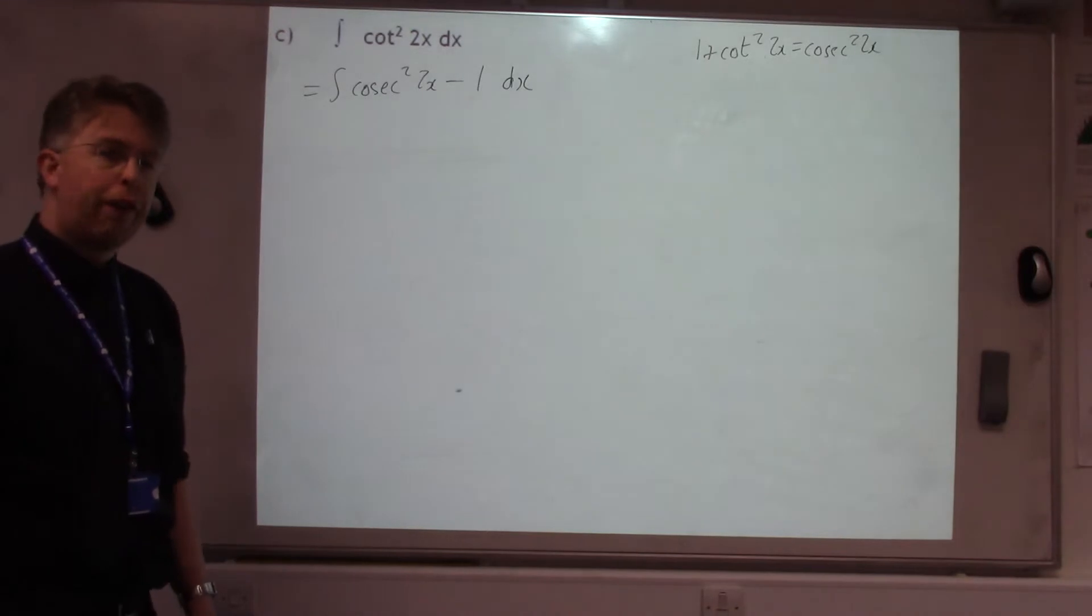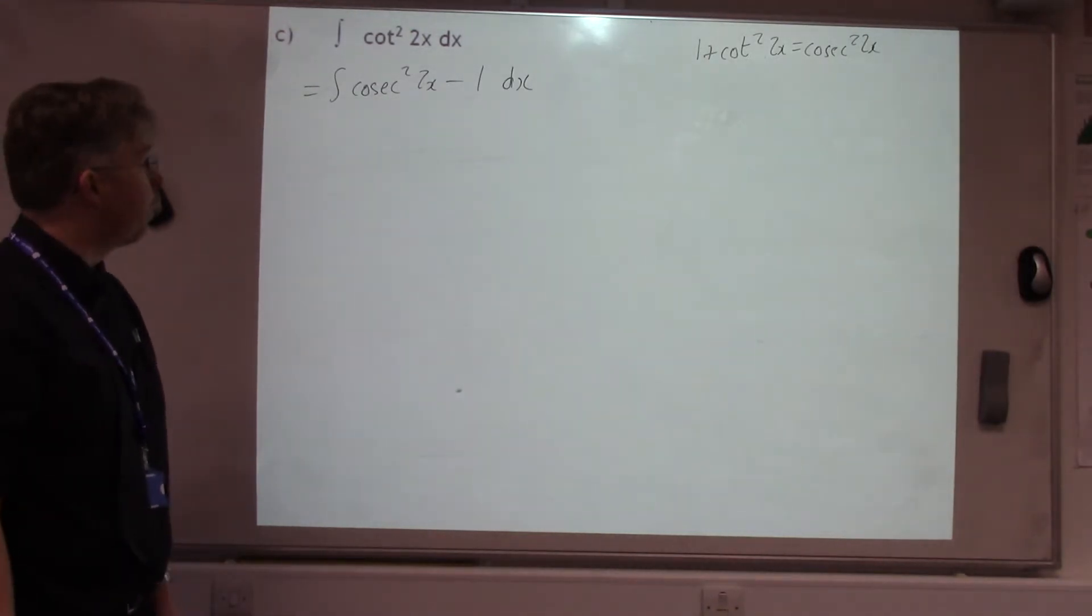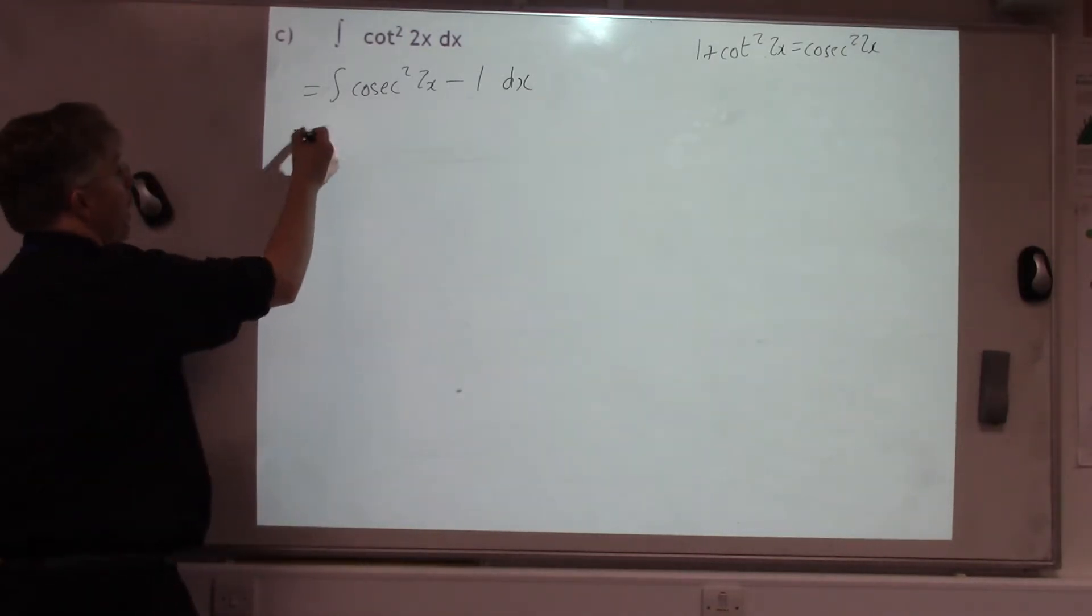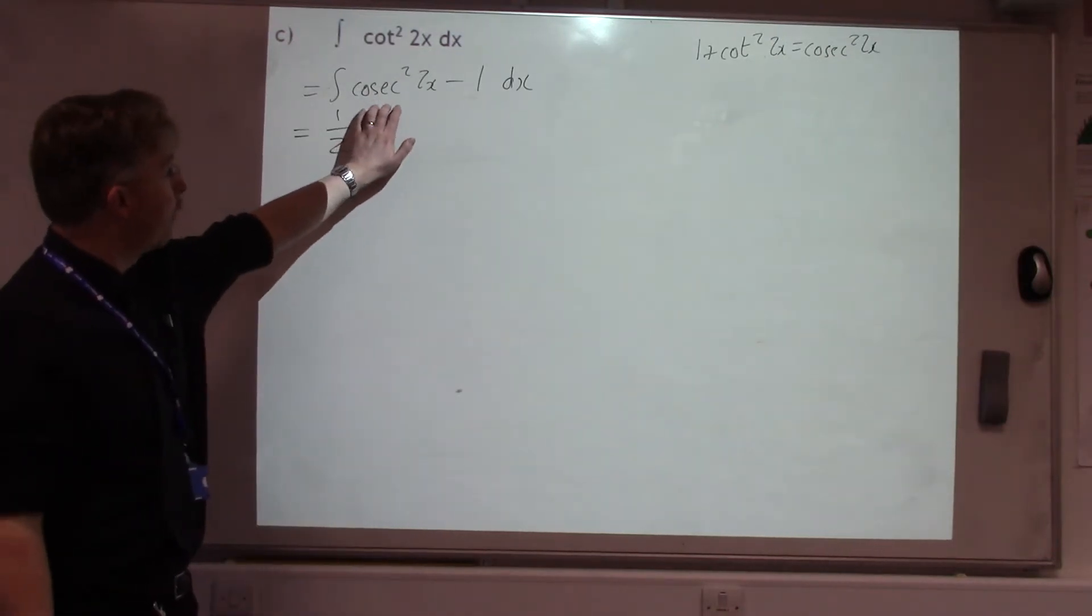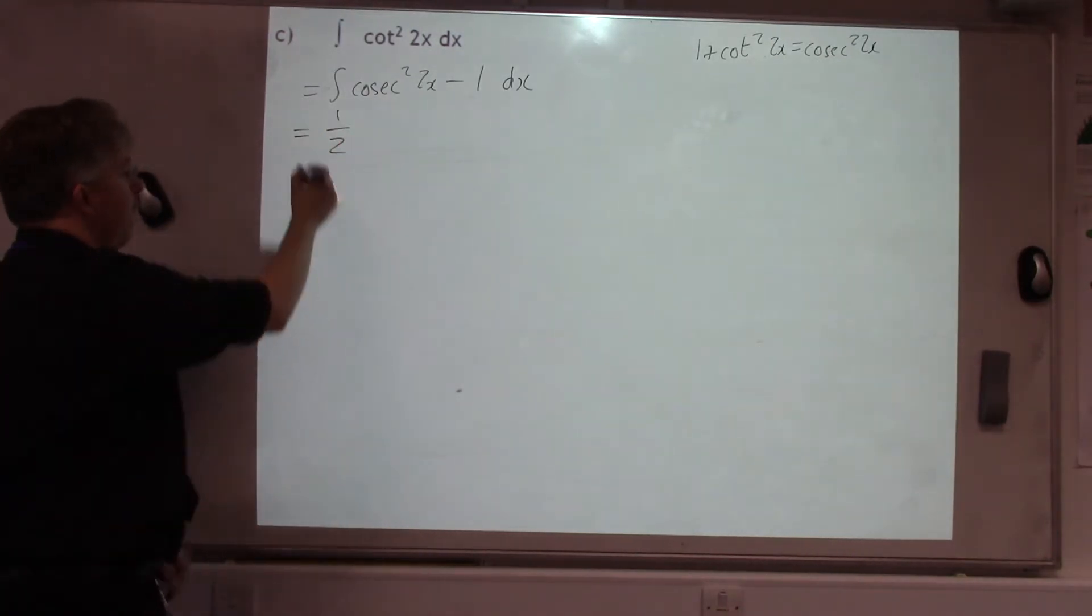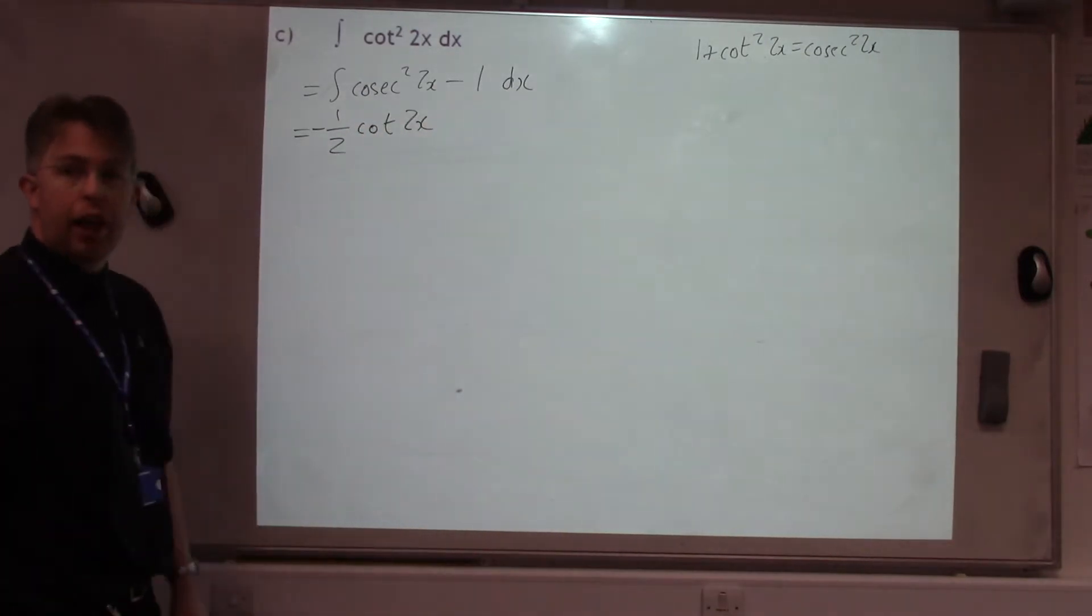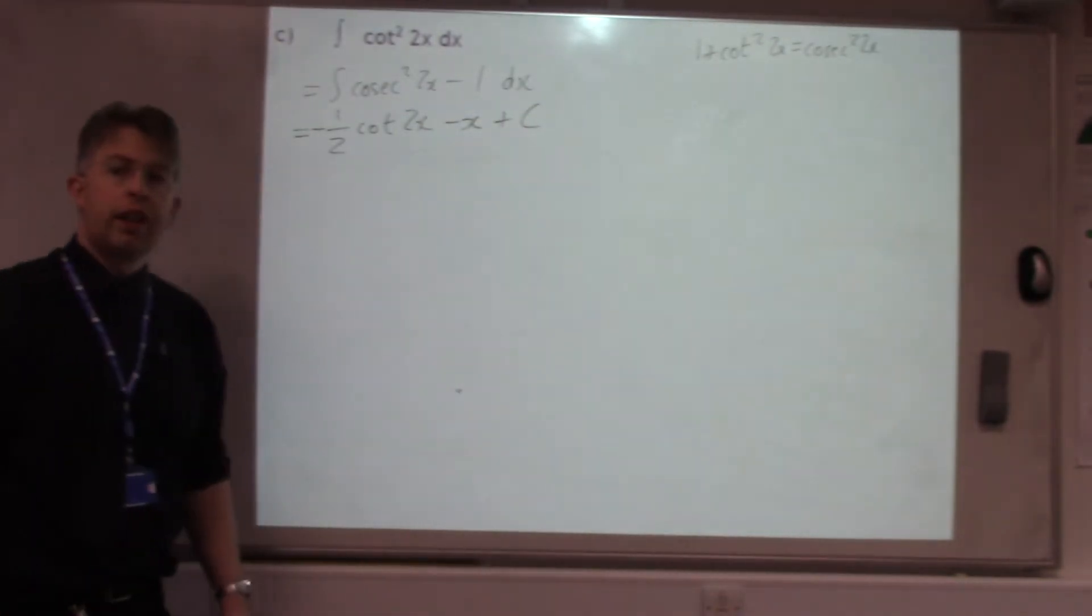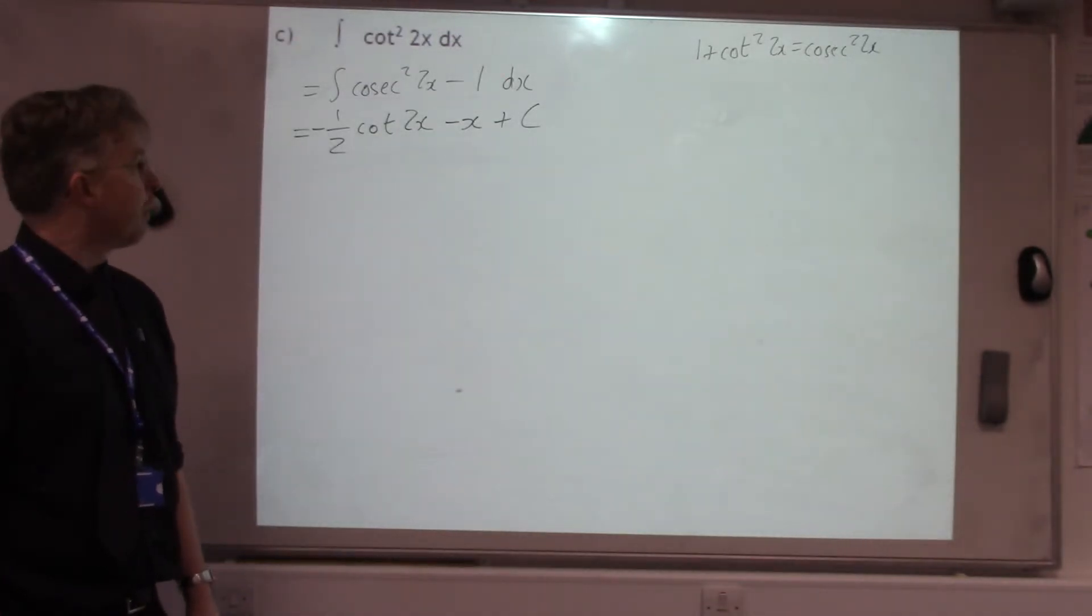Now, from the C3 formulae booklet, cot integrates to cosec squared, but we've got the 2x, so we have to divide by 2. So, cot differentiates to minus cosec squared, so we'll need a minus at the front. And it's -1/2 cot 2x, minus 1 integrates minus x, plus c. So, this one is more unusual. It'd be more likely to see the tan squared one than the cot squared one to integrate.